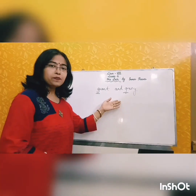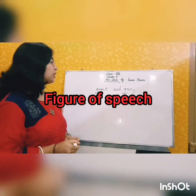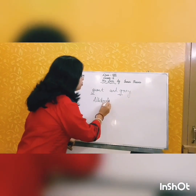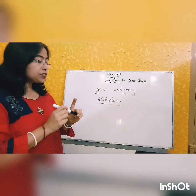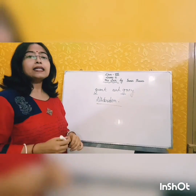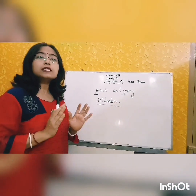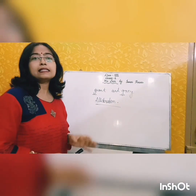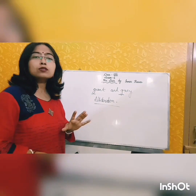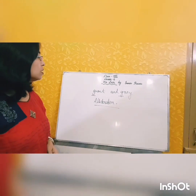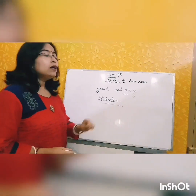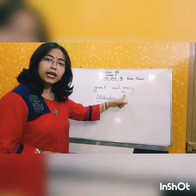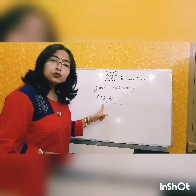Next comes 'giant and great.' Here we find another figure of speech — alliteration. Alliteration is a figure of speech in which the repetition of the same speech sound is used to make the rhythmical sense stronger and the music also becomes stronger. In these two words, 'giant and great,' both begin with the G sound. So alliteration is used by the poet here.